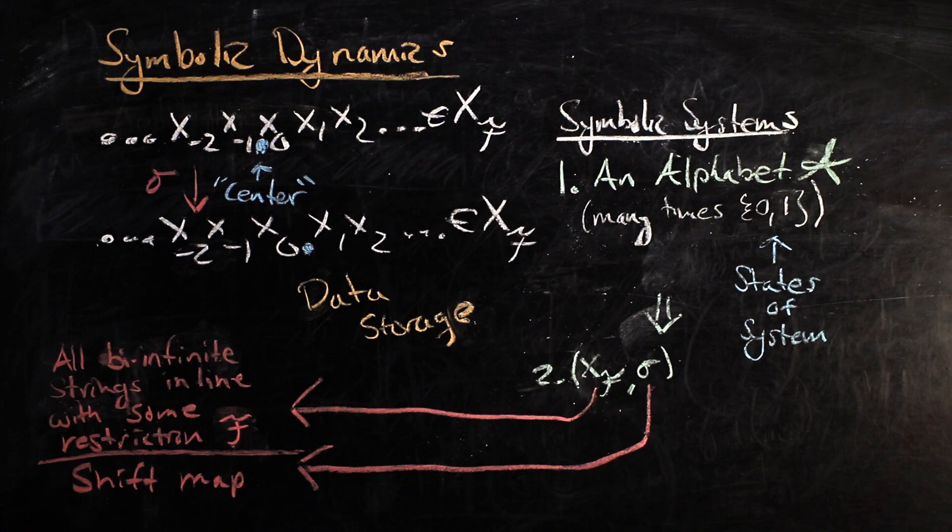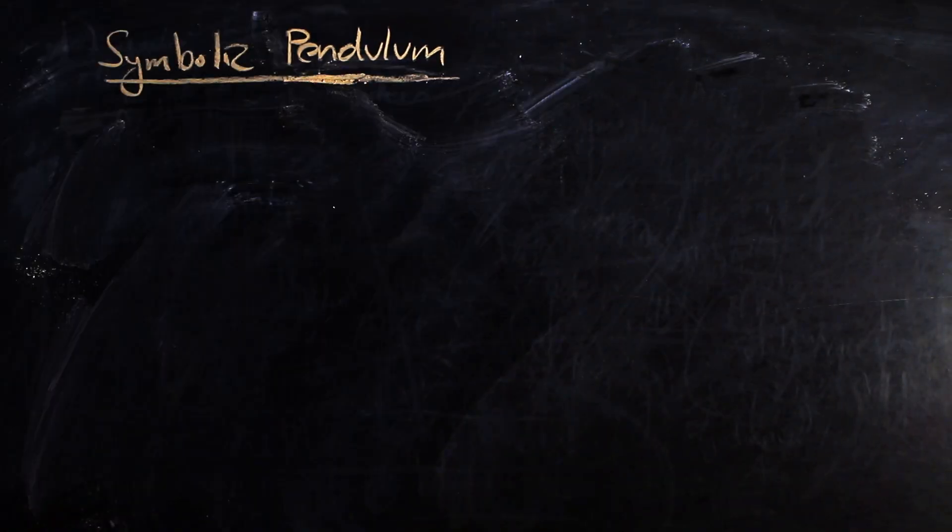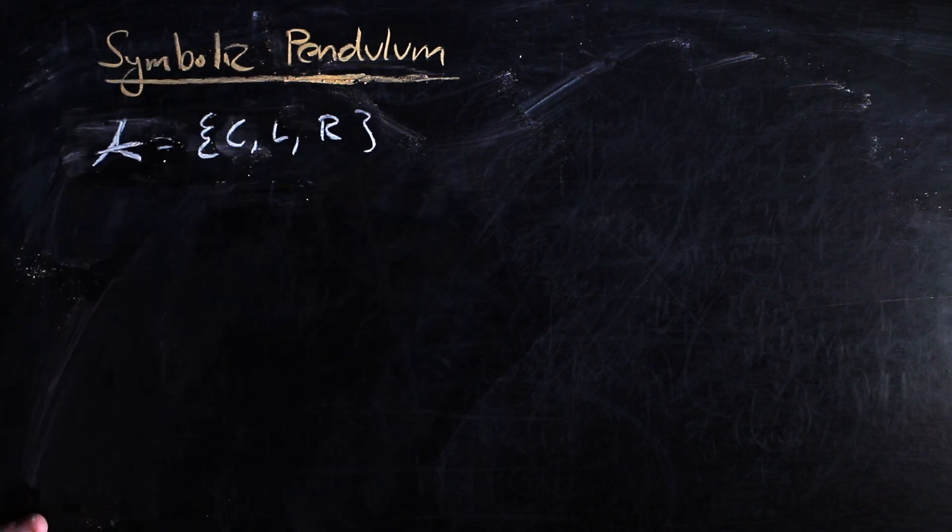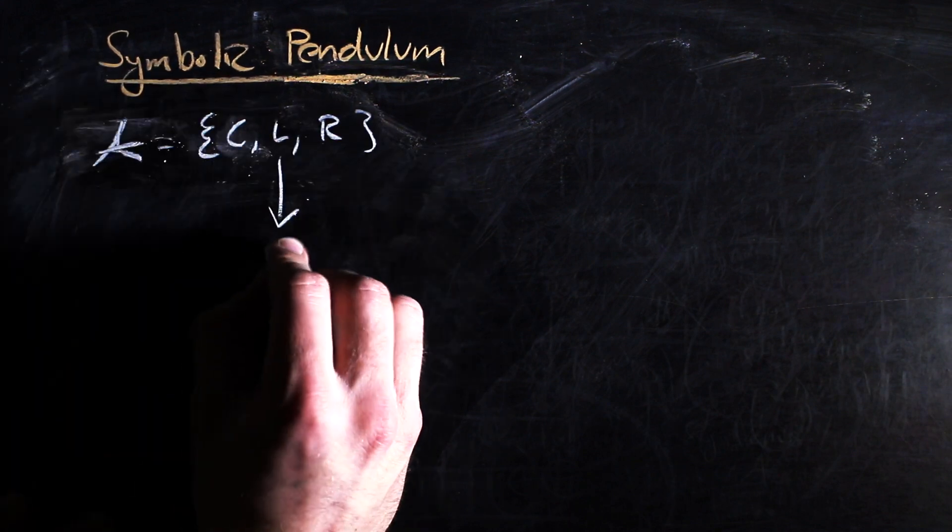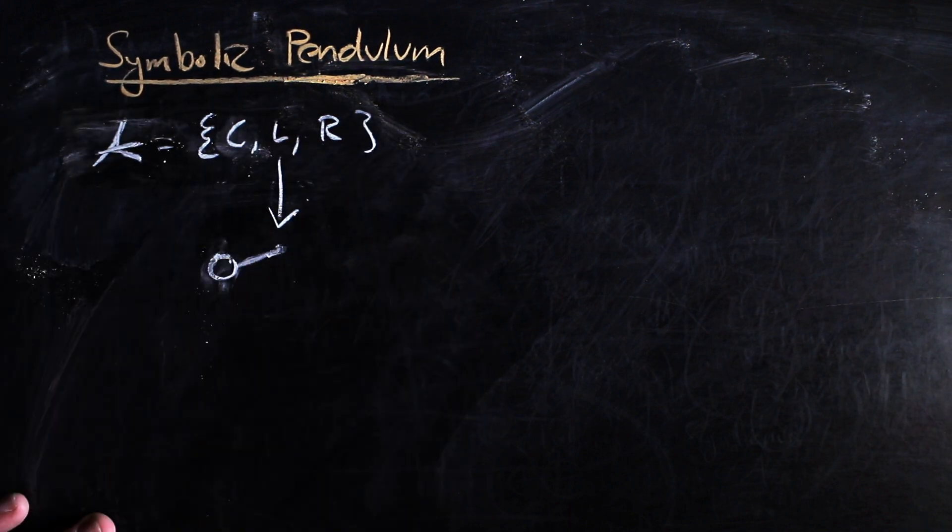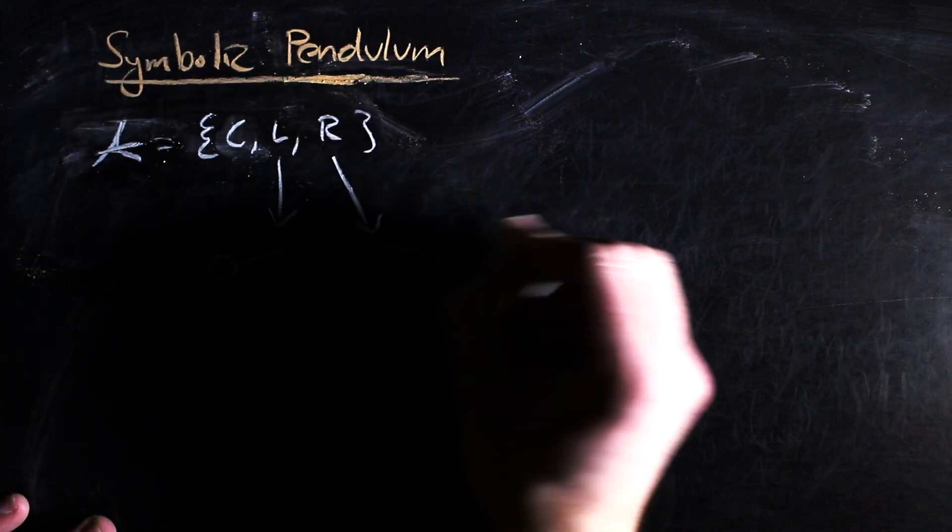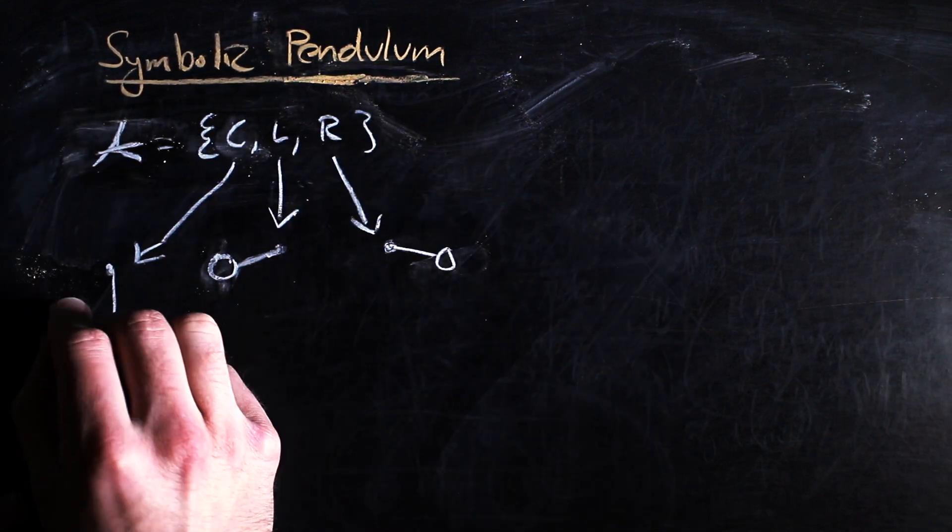For example, you might have a symbolic representation of a pendulum by giving it the states C, L, and R, where L is when the pendulum reaches its maximum height on the left, R is when it reaches its maximum height on the right, and C is when it is between the two.